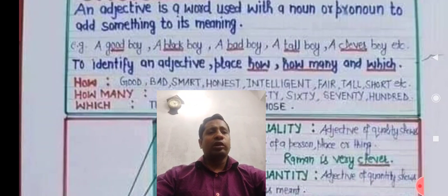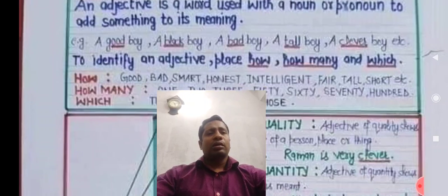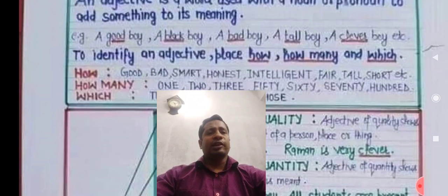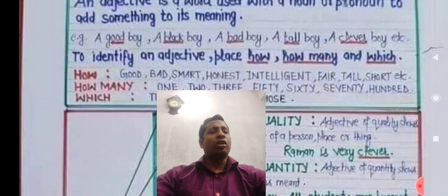Look at 'a good boy.' Here, 'boy' is a common noun. 'Good' is the quality of the boy, so 'good' is an adjective. Similarly, a bad boy, a tall boy, a clever boy — bad, tall, clever, etc. are all adjectives.